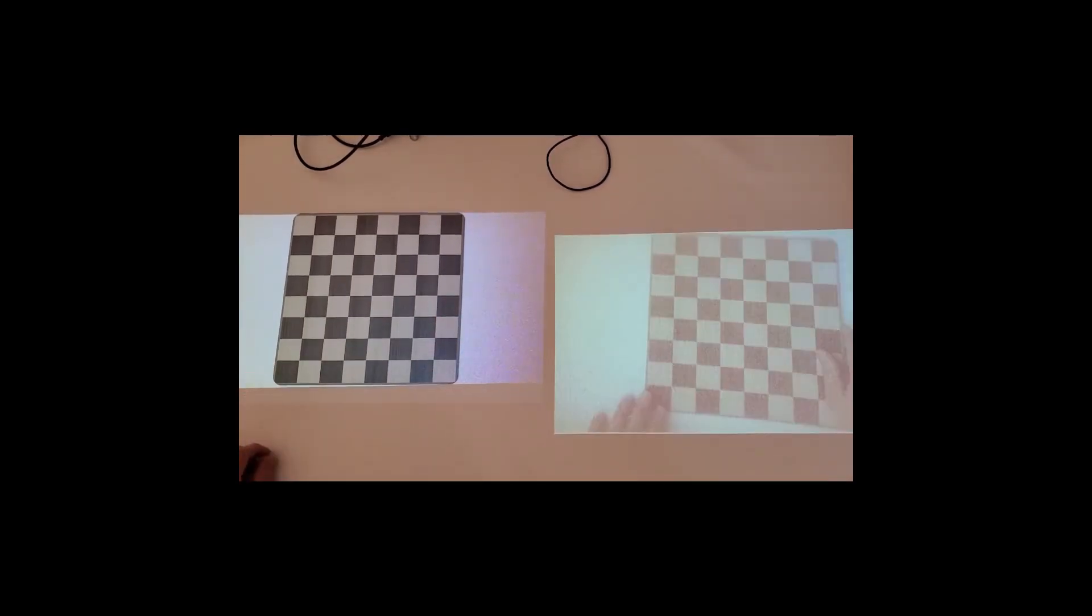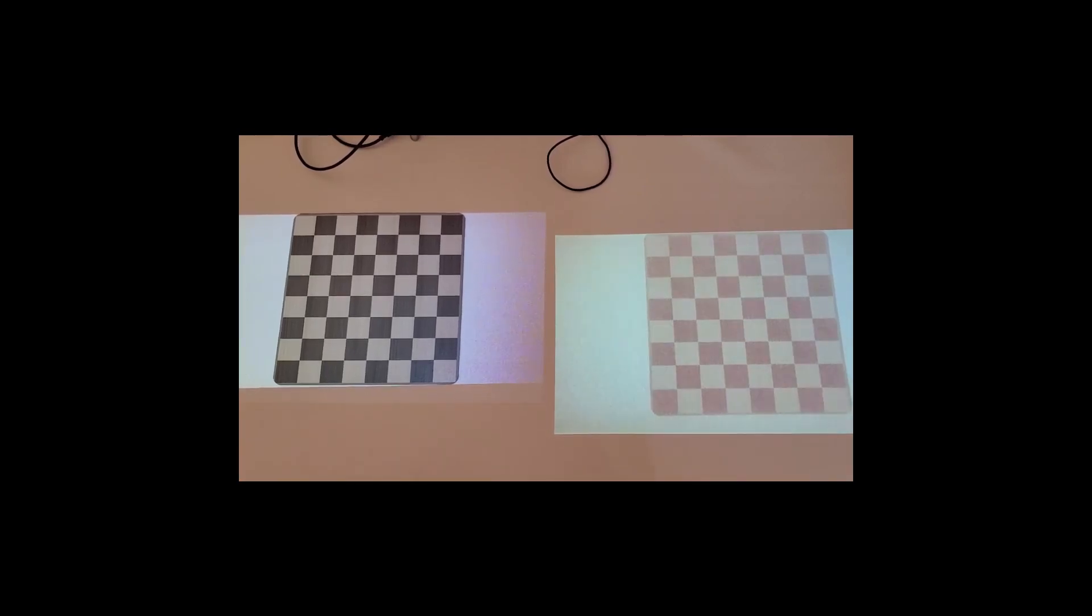The function of the device is to capture what's on your surface with the camera and transmit it over the internet to another player's device, where it is then projected onto their surface. Likewise, their tokens and dice will be captured and simultaneously transmitted to your device and projected onto your surface.